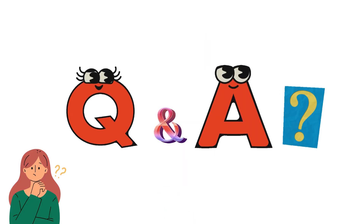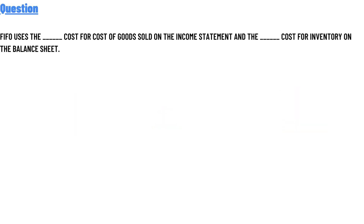Our question today is: FIFO uses the cost for Cost of Goods Sold on the income statement, and the cost of inventory on the balance sheet. The correct answer to the question is: oldest, newest.